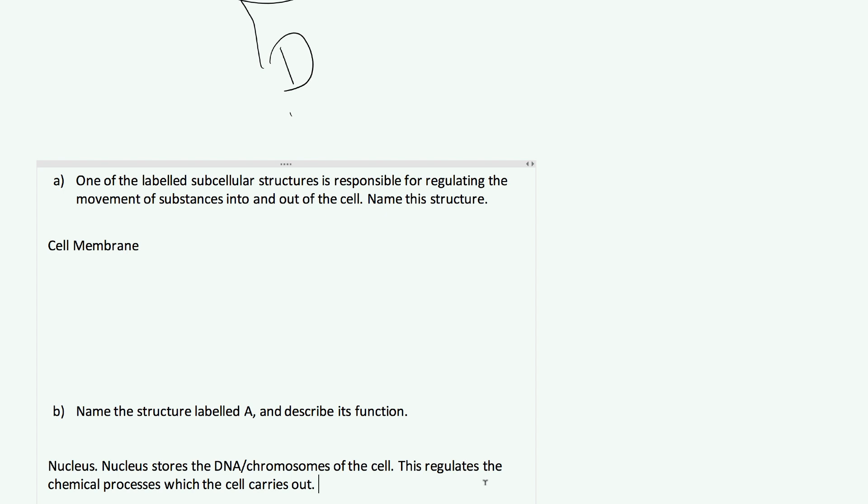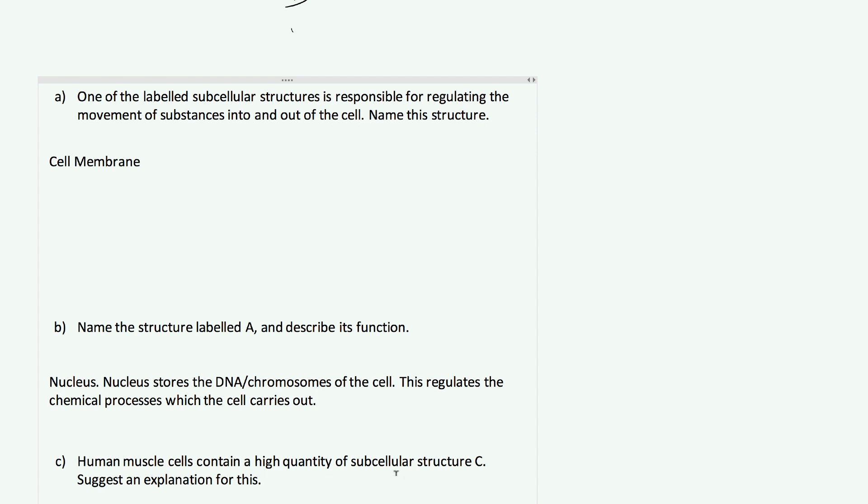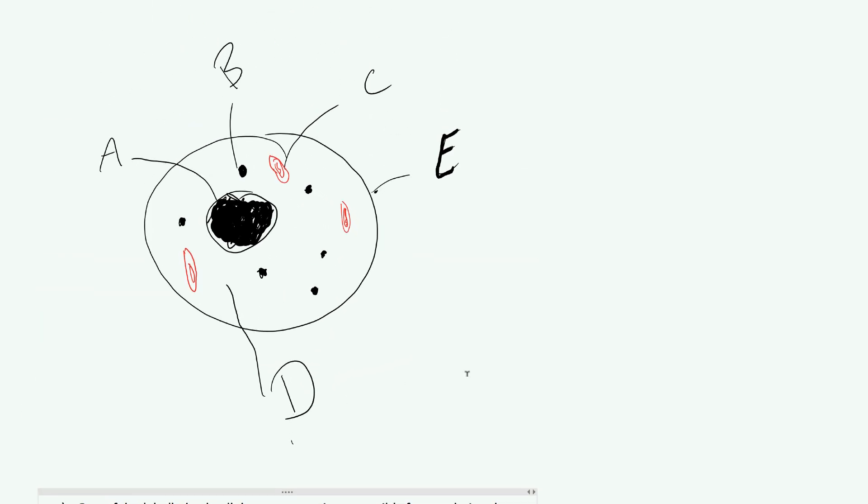If the DNA is coding for that enzyme and that enzyme therefore is doing something in the cell, the DNA has therefore regulated that process. That's why we say that it can regulate chemical processes which the cell carries out. Moving on, part C says that human muscle cells contain a high quantity of subcellular structure C. Suggest an explanation for this. Let's go back up and have a look. C is this red thing here.